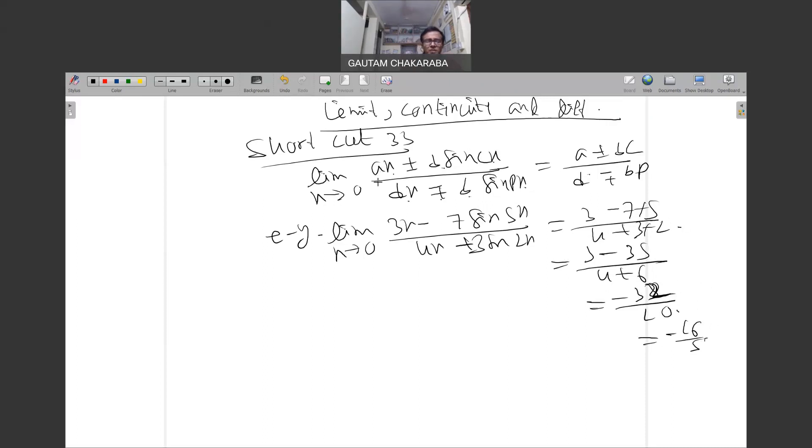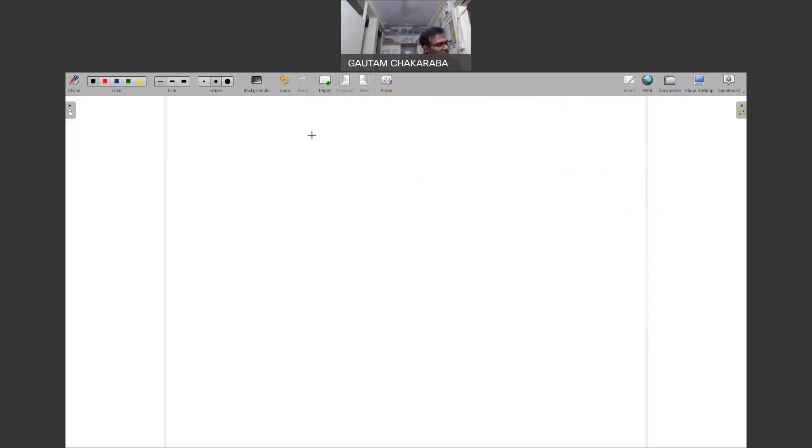Now next shortcut 34: limit x tends to zero, 1 plus cosine x by 1 plus cosine bx is equal to 1. Example: 1 plus cosine 5x by 1 plus cosine 3x is equal to 1, okay.